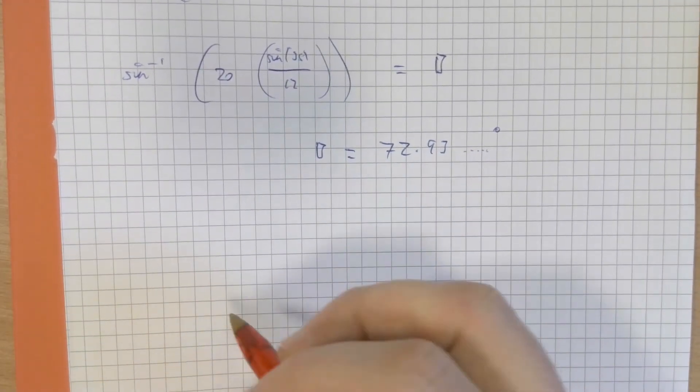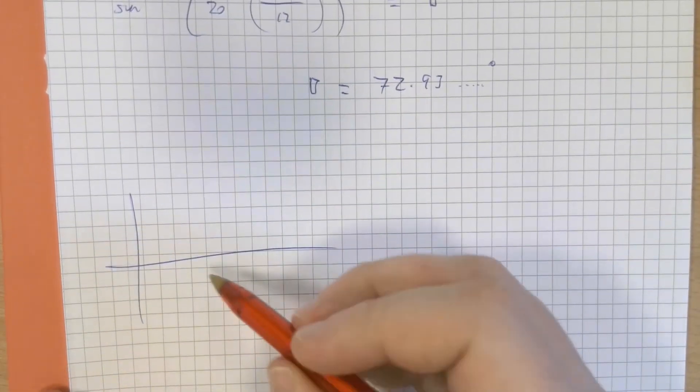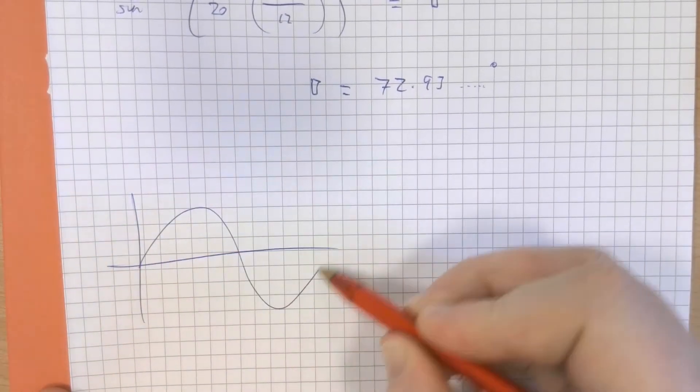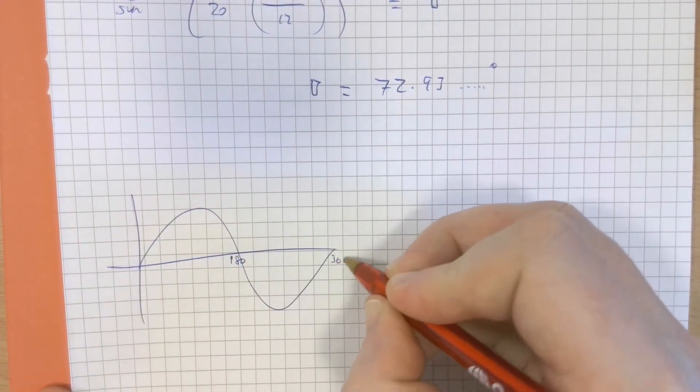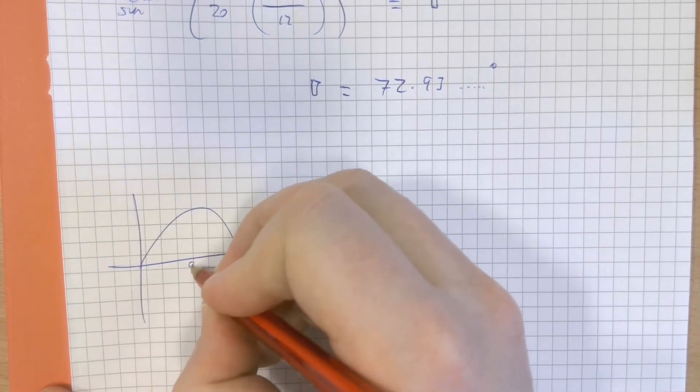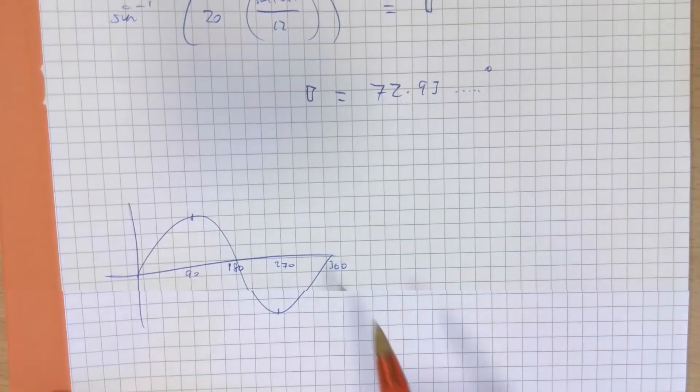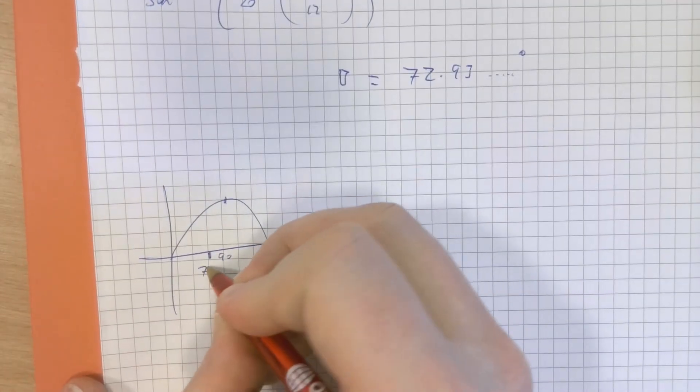Well, let's think about how the sine graph works. Let's look at how this actually looks. Sine looks like this. Here's 180. Here's 360. Here's 270 down here. And here is 90 up here. 72.93 is roughly about here.